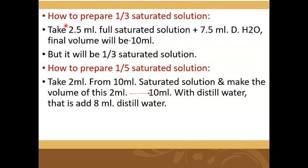Please make a correction for the one-third saturated solution. You take one-third of the 10 ml — calculate the volume by dividing 10 by 3, and that volume of fully saturated solution is used. Then make the total volume up to 10 ml with distilled water. For a one-fourth saturated solution, take 2.5 ml of fully saturated solution and add 7.5 ml of distilled water to a final volume of 10 ml. For one-third saturation the volume is approximately 3-point-something — calculate it with a calculator.